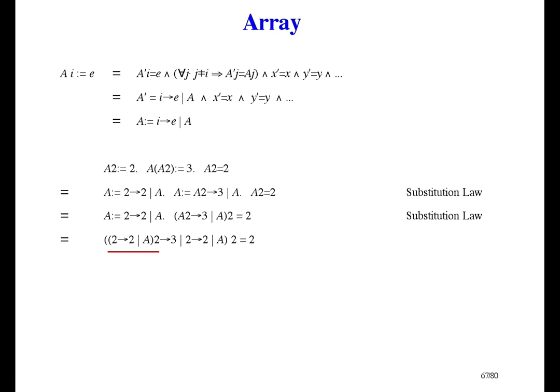Now look at this part. It simplifies to 2. Now the left side starts off with 2 mapping to 3. And it's indexed by 2, so it simplifies to 3. And 3 equals 2 is false. And that's the right answer.